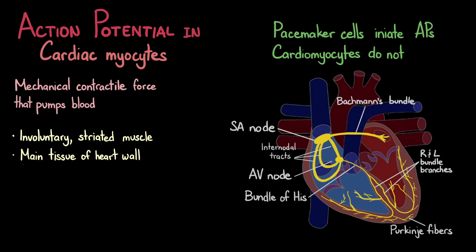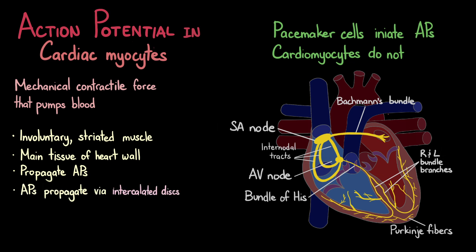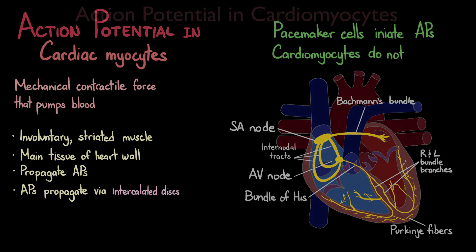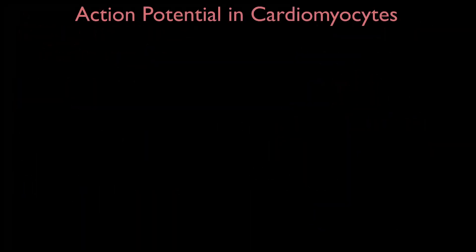Unlike pacemaker cells shown in yellow in the figure, cardiac muscle cells cannot initiate action potentials. Instead, cardiomyocytes propagate the action potentials that are initiated by neighboring pacemaker cells. The heart can coordinate muscle contraction because cardiomyocytes are linked to each other and to pacemaker cells through a special type of gap junction called intercalated discs, that can quickly propagate action potentials.